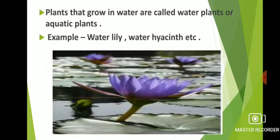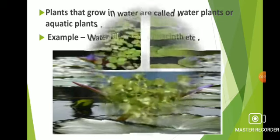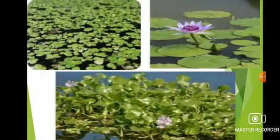Plants that grow in water are called water plants or aquatic plants. For example, water lily and water hyacinth. Some plants grow only in water and they die when taken out of water. Water lily, water hyacinth, duckweed and lotus are some examples of aquatic plants. Here in the following pictures you can see the image of some aquatic plants.